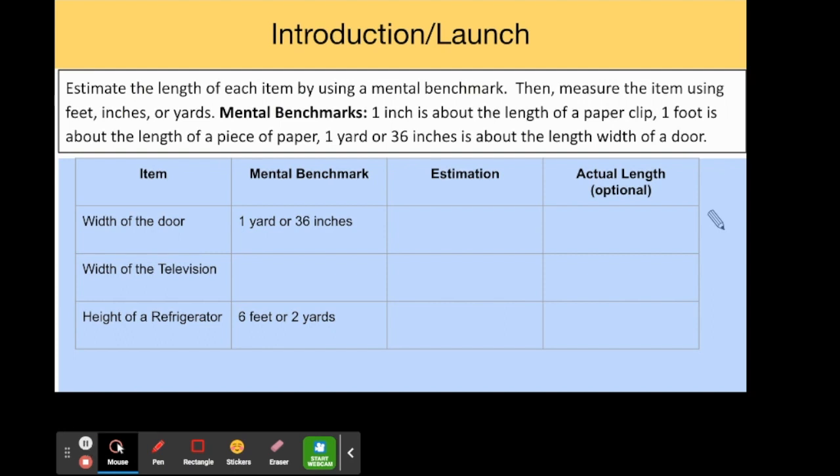Let's look at an example from today's lesson. Estimate the length of each item by using a mental benchmark, then measure the item using feet, inches, or yards. Mental benchmarks: 1 inch is about the length of a paper clip, 1 foot is about the length of a piece of paper, and 1 yard or 36 inches is about the width of a door.